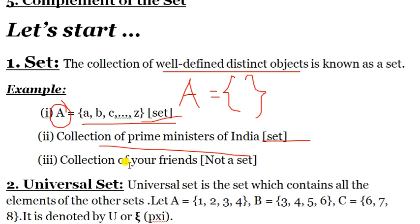But collection of your friends, collection of beautiful girls, collection of handsome boys, or collection of good schools — these kinds of words you cannot find out exactly. Words like good, beautiful, and handsome depend on person to person and they vary. That's why these are not well-defined, and that's why they are not a set.